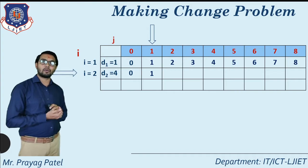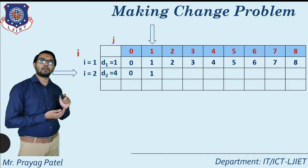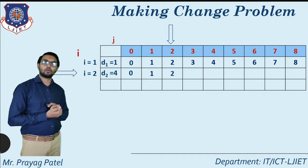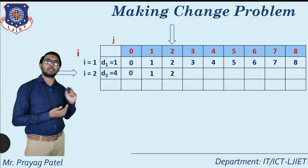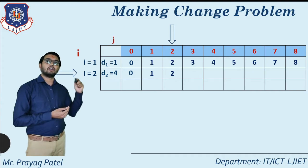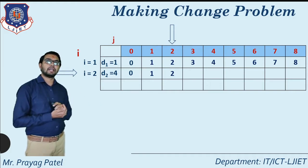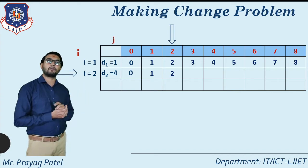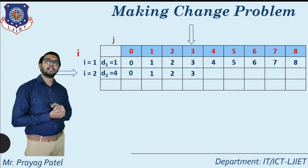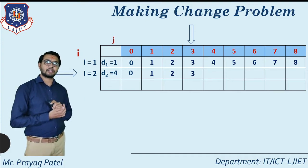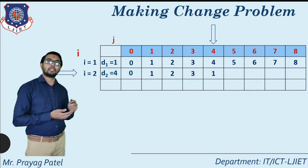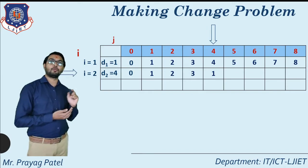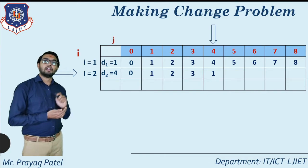For change for 1, only 1 coin of denomination 1 is required. Next, location C[2][2]: row 2, column 2. Total coins required equal 2, because the coin of denomination 4 does not satisfy our condition here, so we select only coins of denomination 1 — meaning 2 coins of denomination 1. Next C[2][3]: for change for 3 we need 3 coins of denomination 1. Next location C[2][4]: remember this step, there are two possibilities.